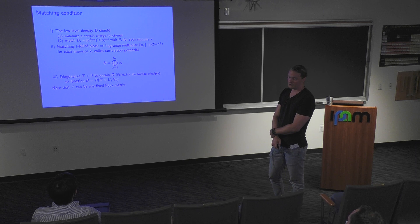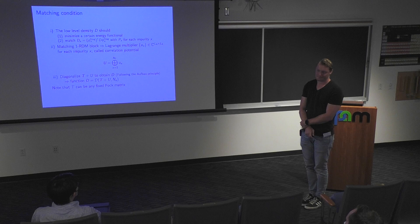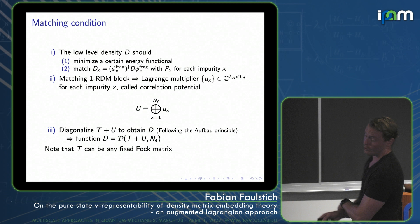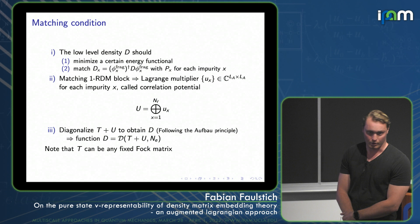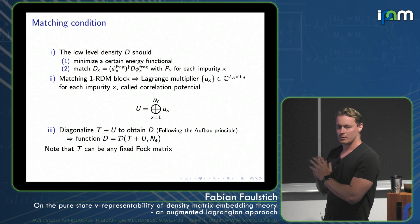Whenever I say density and density matrix, these are all interchangeable in my talk — I will only talk about the 1RDM. If you order your orbitals consecutively with respect to the fragmentation, matching just means you pick out the diagonal blocks. So it's very useful in DMET to just think about matching diagonal blocks of some high-level object.